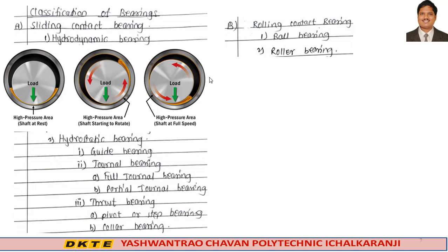Disadvantages of hydrodynamic bearings: they produce high friction at low speed. They are not suitable for low speed applications. They offer less accuracy in positioning. They offer high starting friction.